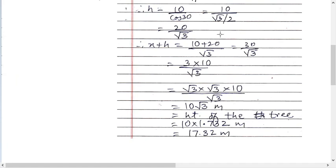So now you got h and now you got x. So x plus h equals to 10 by root 3 plus 20 by root 3, 30 by root 3. Solve it, rationalize it. So 3 into 10 divided by root 3 times root 3, root 3 gone, so 10 root 3.